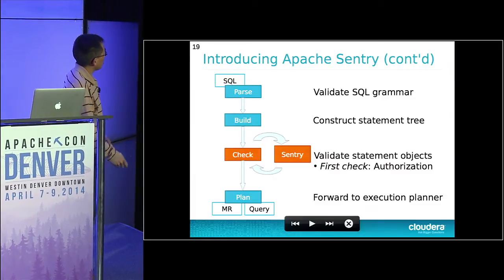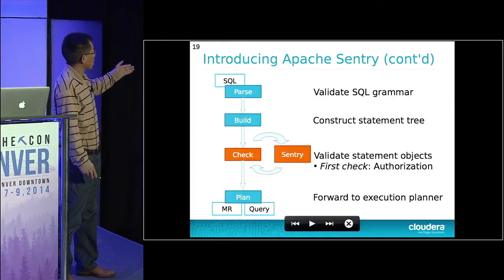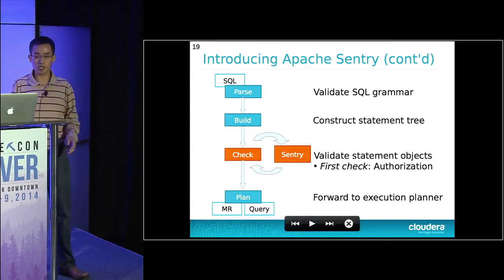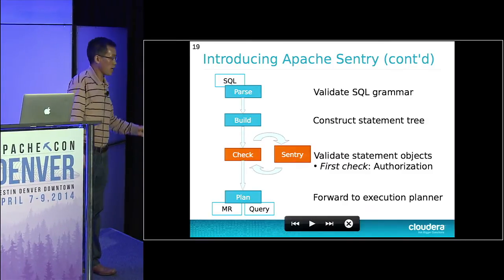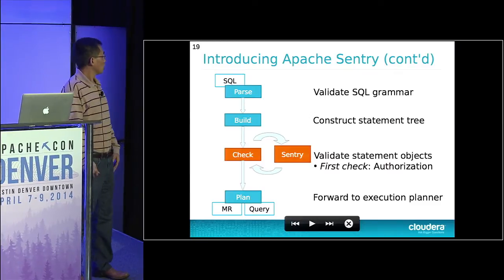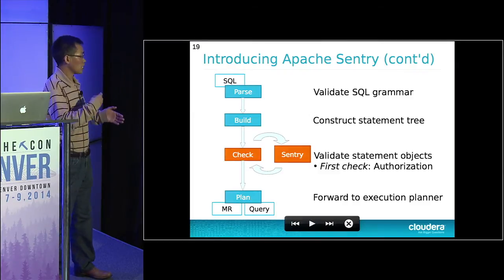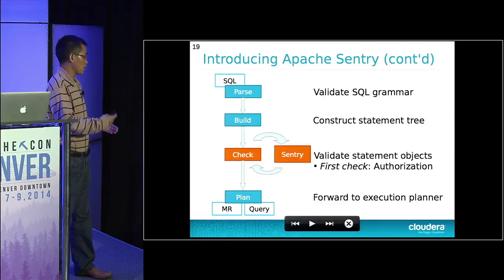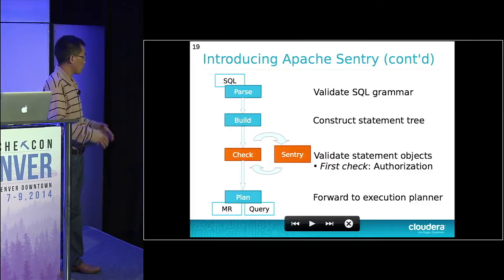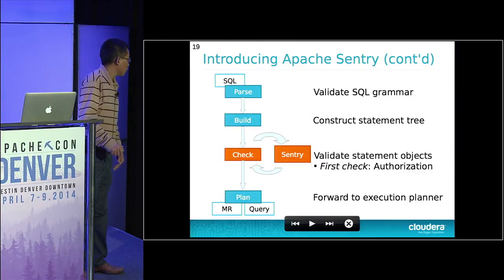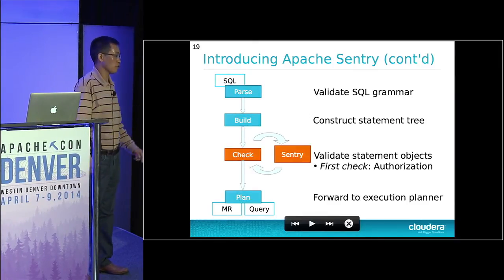Here is how Sentry works in action in the context of SQL. Let's say Hive receives a query. The parser parses the query and validates it against SQL grammar. If valid, it builds an abstract syntax tree. Then it consults with Sentry to check whether the statement objects — like the table to be accessed — and the actions should proceed. Sentry returns yes or no depending on the policies. Then Hive proceeds to either execute the query or rejects it based on the response from Sentry.